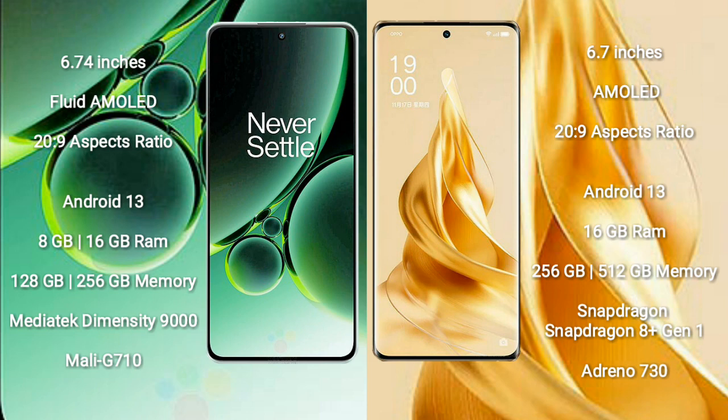OnePlus Nord 3 runs on the Android 13 operating system. OPPO Reno 9 Pro Plus also runs on Android 13. OnePlus Nord 3 comes with 8GB or 16GB RAM and 128GB or 256GB internal storage.